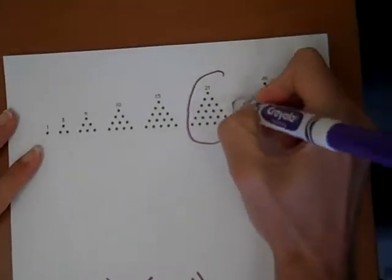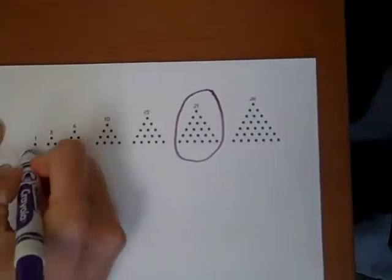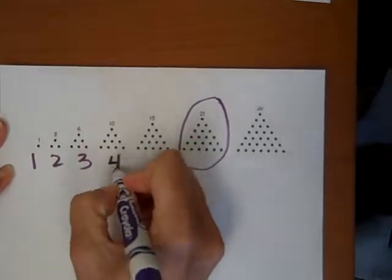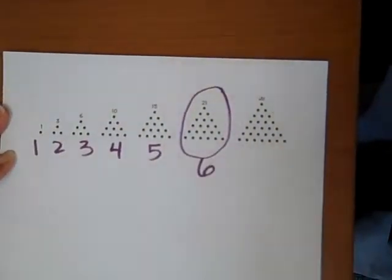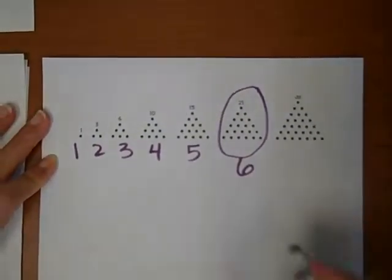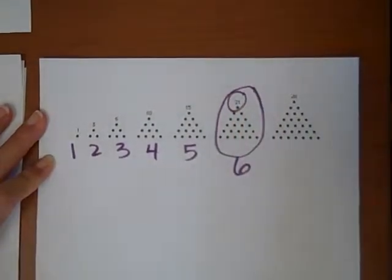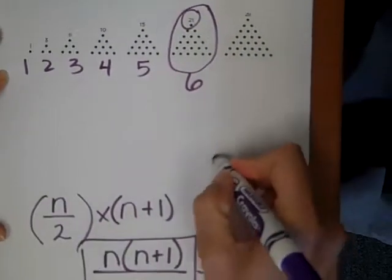Here we have twenty-one. Twenty-one is the first, second, third, fourth, fifth, sixth triangular number. And it should be twenty-one. Let's see if we get twenty-one.